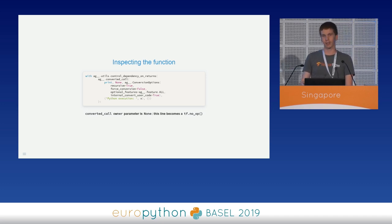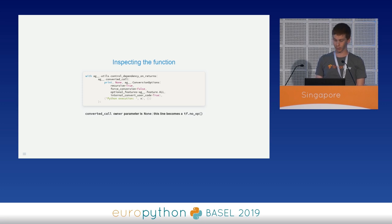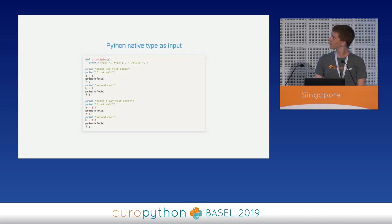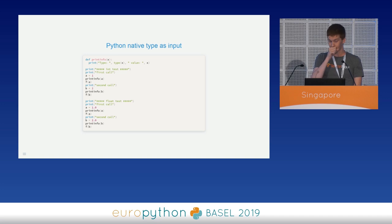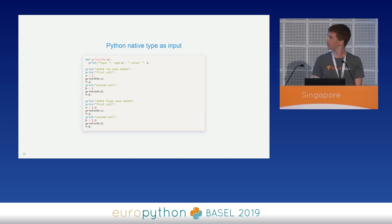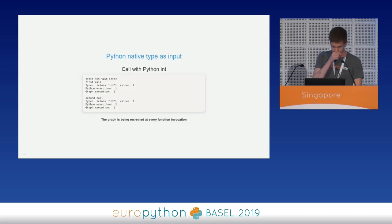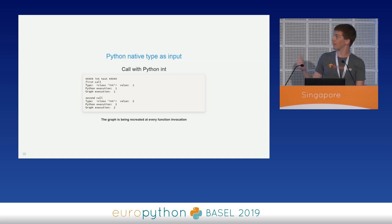Now we can see what happens when the input is not a tf.Tensor but a Python native type. The code is similar to the previous one — we defined a helper function called printinfo to ensure we are feeding the correct data type. Since the function is trivial, we expect the same behavior as before. But as we can see, something weird is going on. When a Python integer is fed as input, the Python execution line is displayed not only once, as we might expect for a single data type, but it's executed twice. The graph is being recreated at every function invocation.